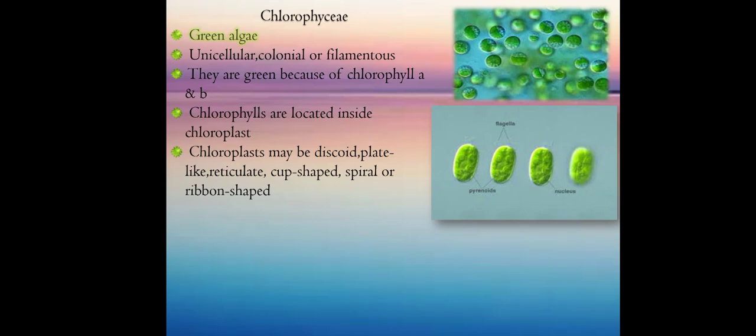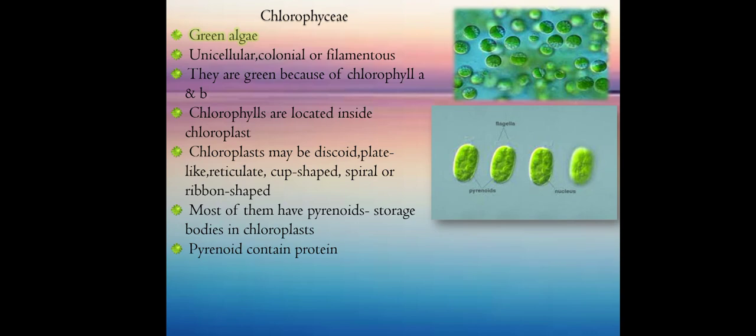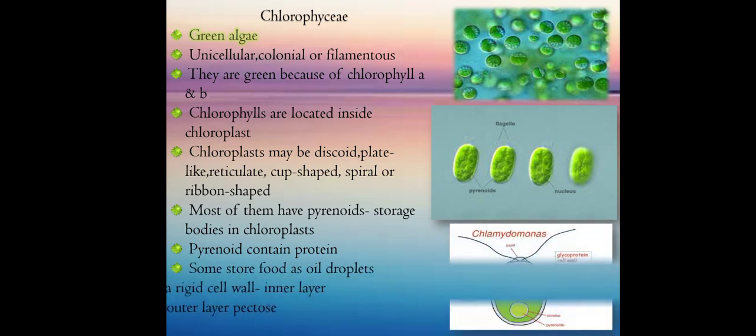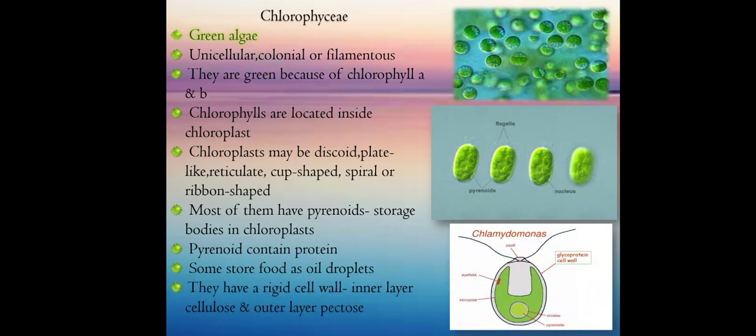And this shape can be described as plate-like, reticulate, cup-shaped, spiral, or ribbon-shaped. Most of them have pyrenoids inside their chloroplasts. Pyrenoid is a storage body that stores mainly protein. Some store food as oil droplets. They have a rigid cell wall, the inner layer is cellulose and outer layer is pectose.